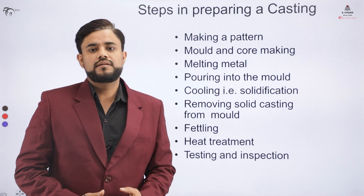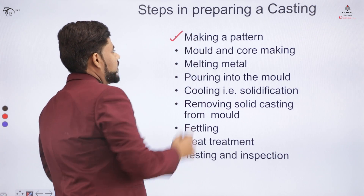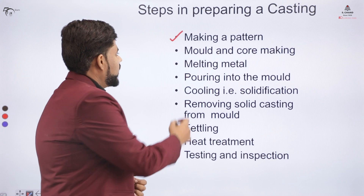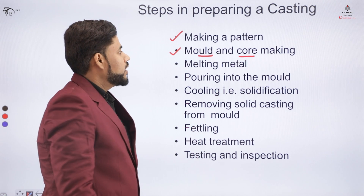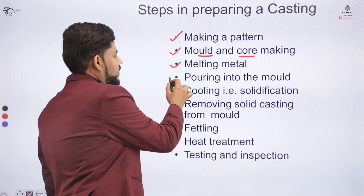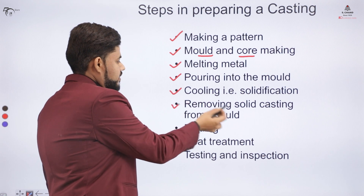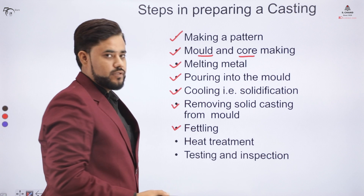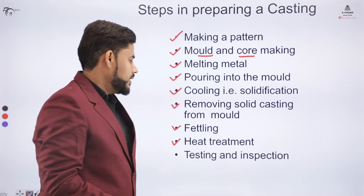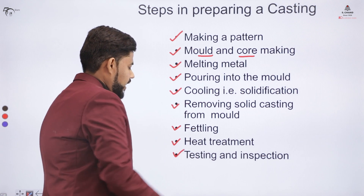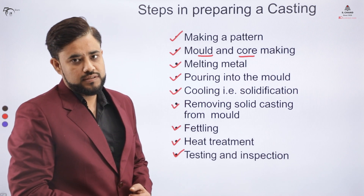Now let us understand the different steps in the casting process. Step one is making the pattern. Step two, we create a mold and if required we also create a core inside the mold. Then we melt the metal, pour it inside the mold, wait for solidification, remove the casting from the mold, and perform the fettling operation. If property enhancement is required, we go for heat treatment, and finally we test and inspect for detection of any faulty castings.